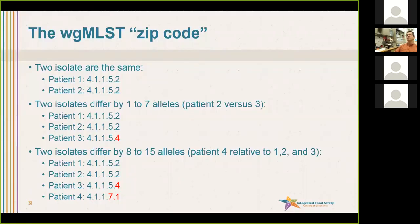Here's what this could look like. Two isolates that are exactly the same — no difference — you get the same zip code. You have two or three isolates with some difference of one to seven alleles: patient one and two are the same, but patient three has a different last number — meaning patient three differs from one and two by one to seven alleles. For an outbreak investigation, you'd probably want to include patient three as part of the interview to find a common exposure. If we add patient four and the last two letters of the zip code are different, that means patient four is different by eight to 15 alleles relative to one, two, and three — pretty different, probably not going to include that one at least in initial questionnaires looking for common exposure.